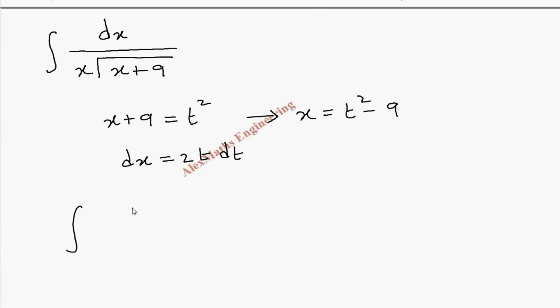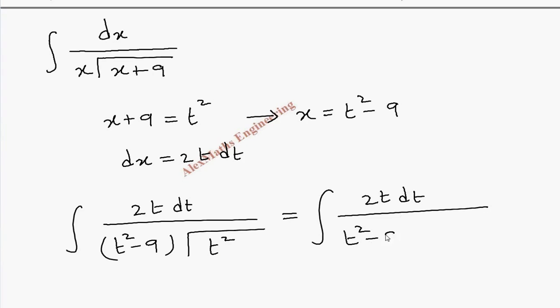The numerator dx is 2t dt whole divided by x is t square minus 9 and root of x plus 9 is root t square. This will become 2t dt whole divided by (t square minus 9) into t. If we take root of t square as t, we can cancel these two.